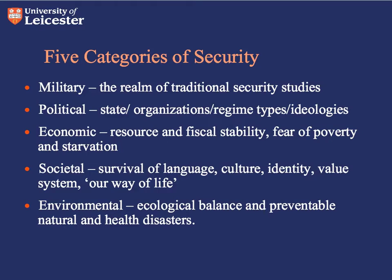A good place to start your analysis is always by asking the question, what's missing? So, what's missing from these categories of security? Gender, for instance, isn't listed as a category or referent object — we could think about whether gender needs to be a separate category, or whether a gendered analysis can be incorporated into the other five. You'll also notice that the individual is missing from this list. Buzan dismissed the idea of human security or individual security as meaningless, arguing that it was either synonymous with human rights or it manifested at a higher level, such as the state or military or economic security. We're going to look at human security in more detail next week.